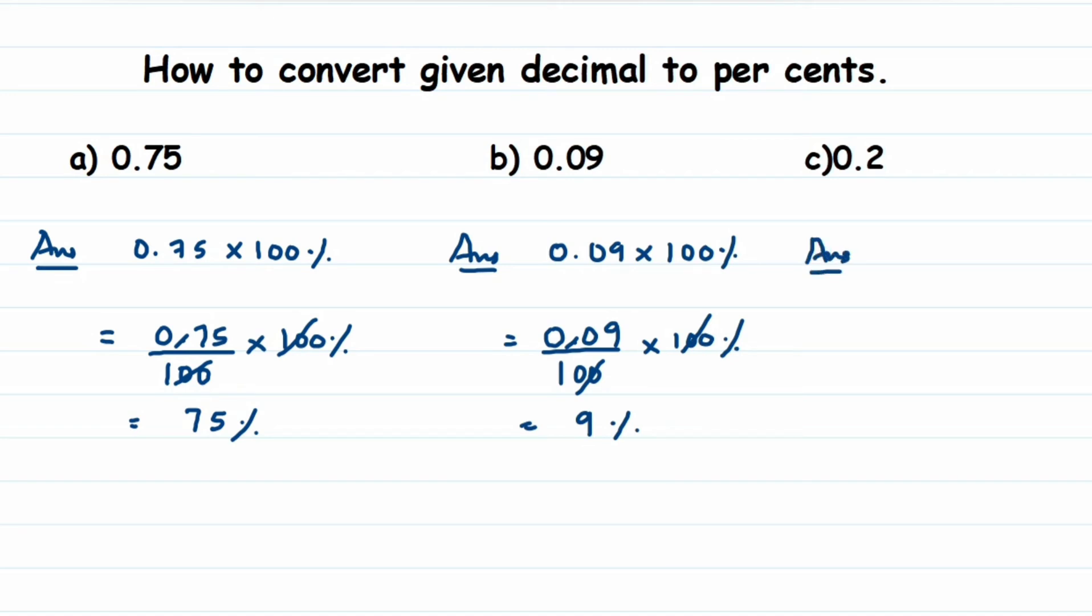Next question, we have 0.2, so 0.2 multiplied by 100 percent. This is equal to 0.2. Remove the decimal, we have to put 10 in the denominator because we have only one number after decimal, then multiplied by 100 percent. We can cancel 10 and 100, we'll get 10 here. So 2 into 10 is 20. This is equal to 20 percent.